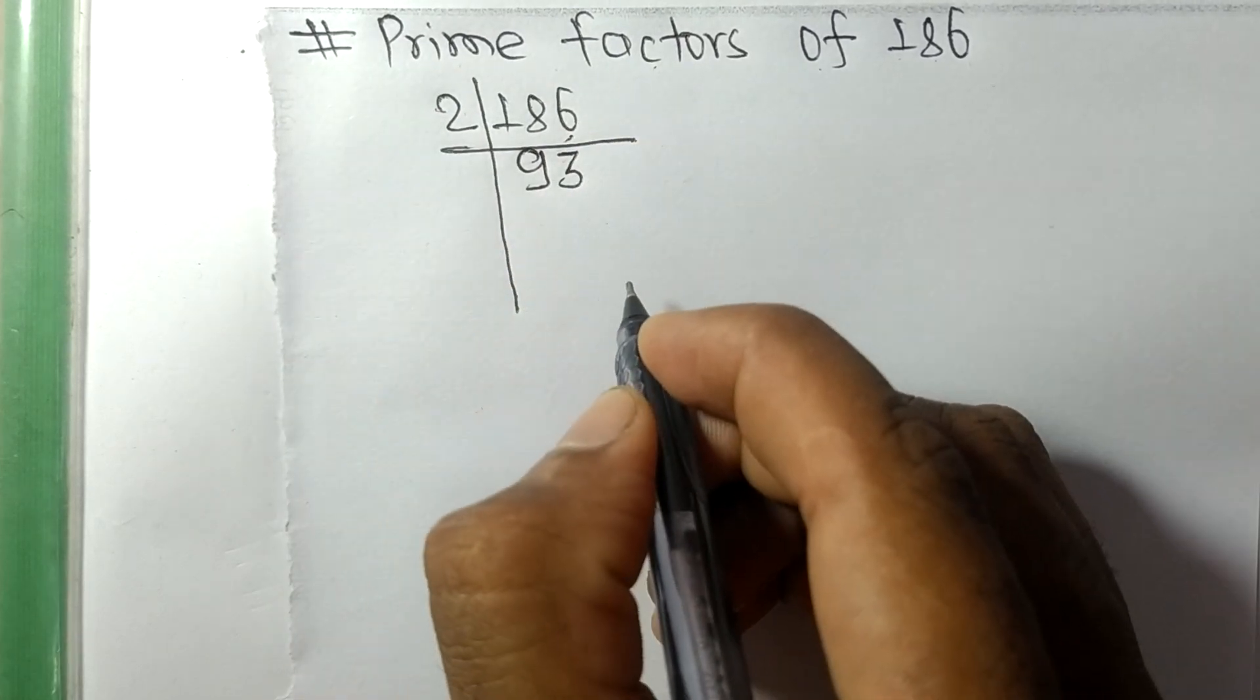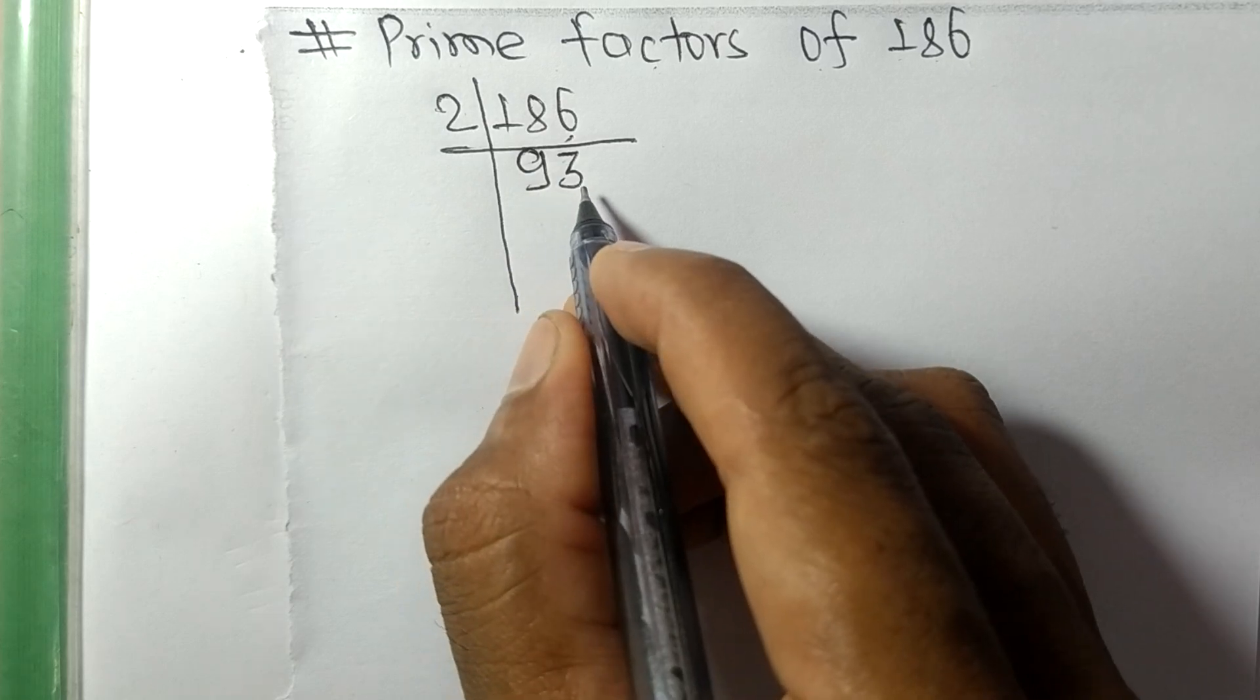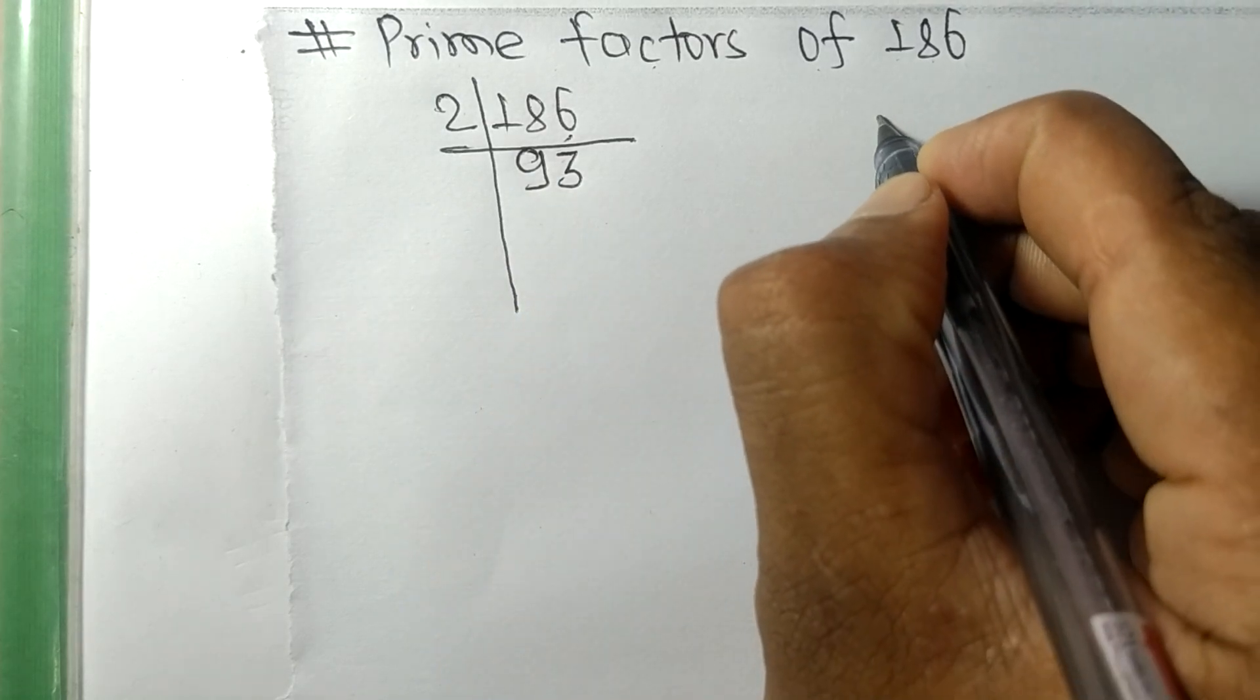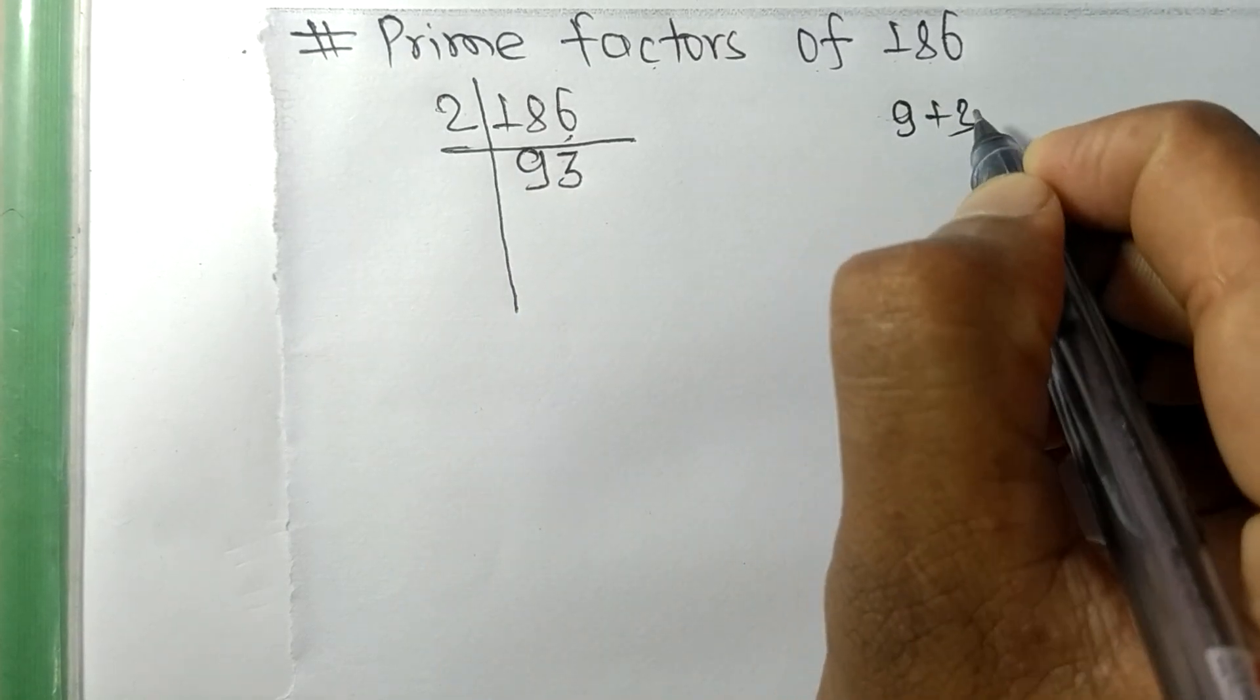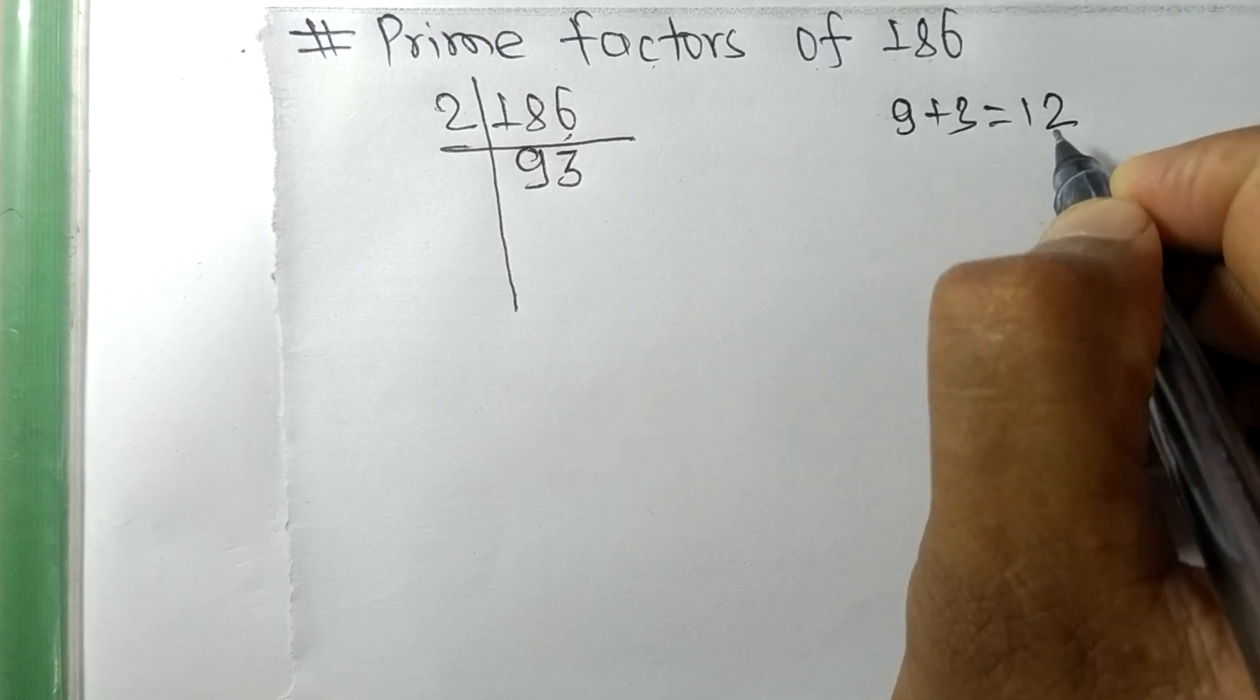So now we have 93, and when we add 9 plus 3 it is equal to 12.